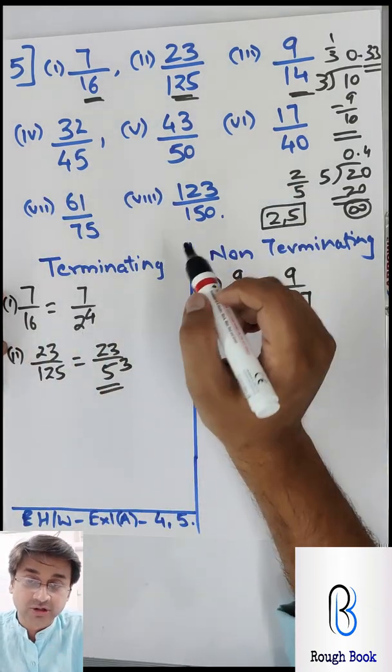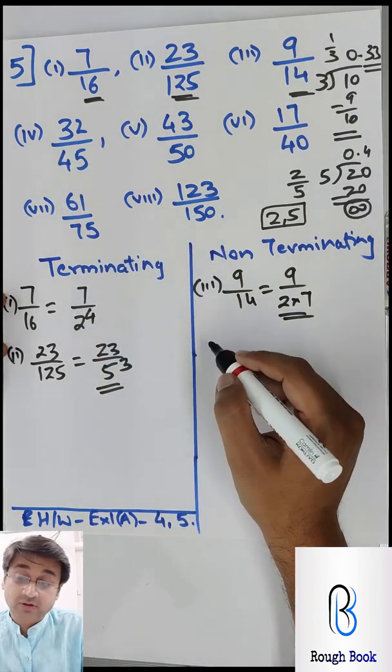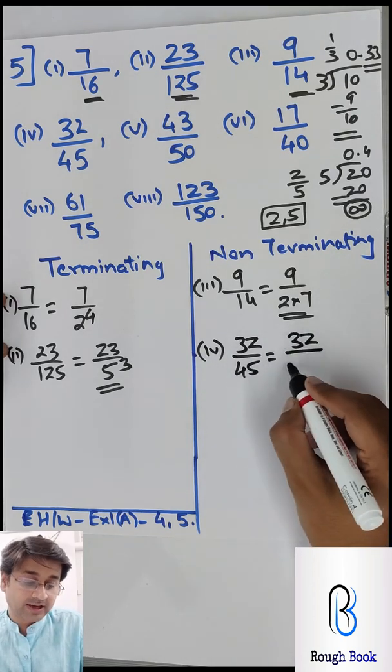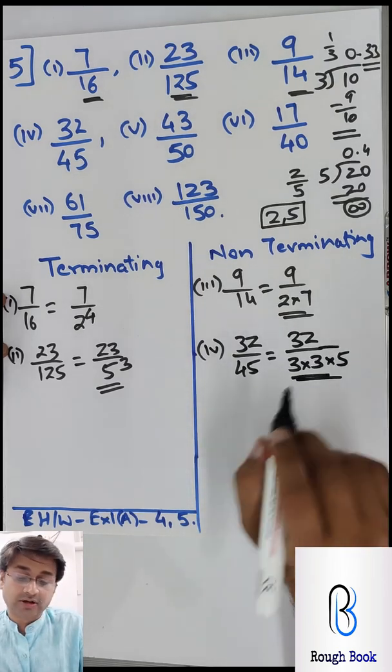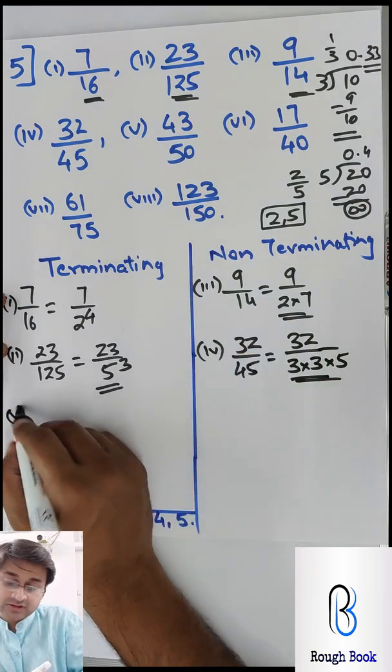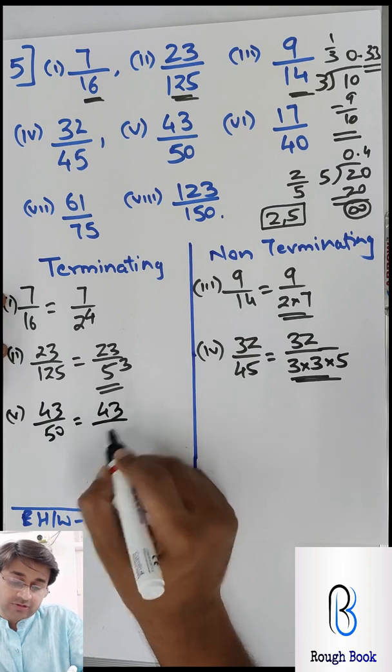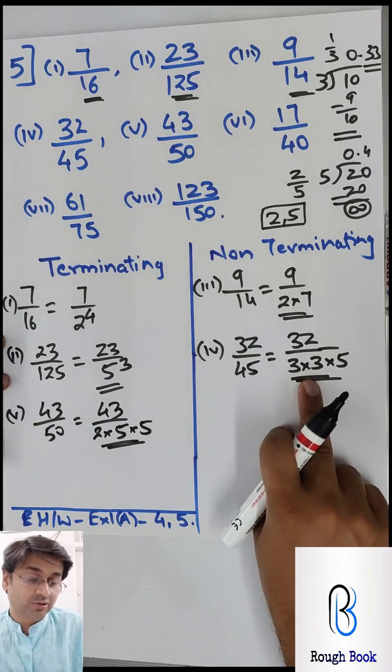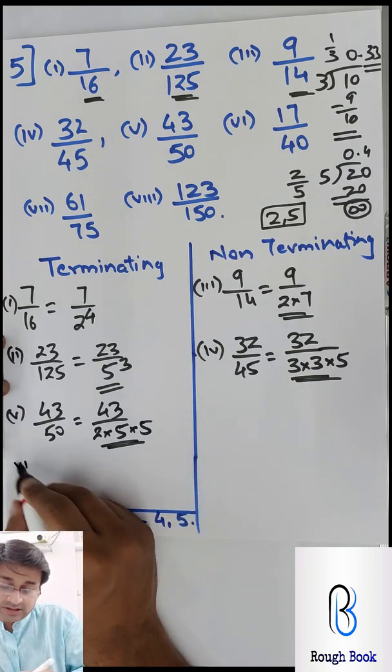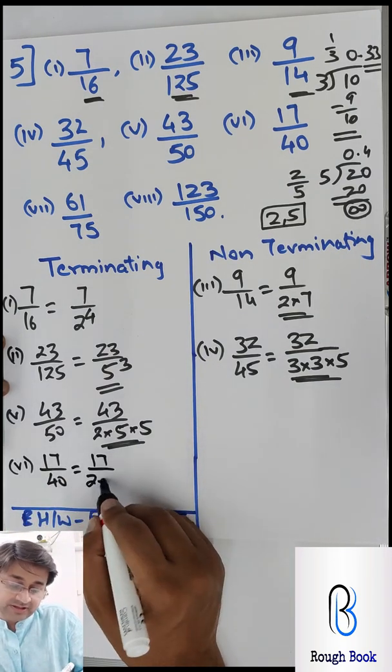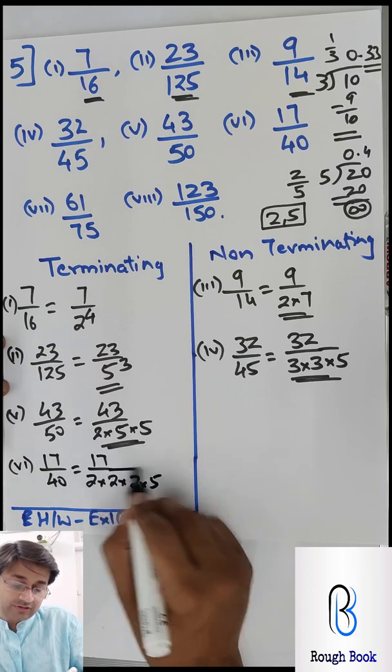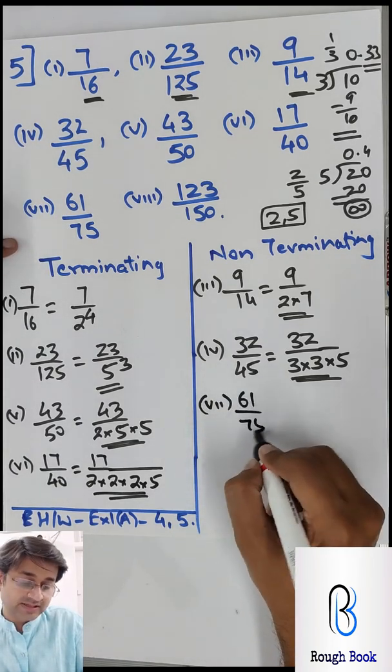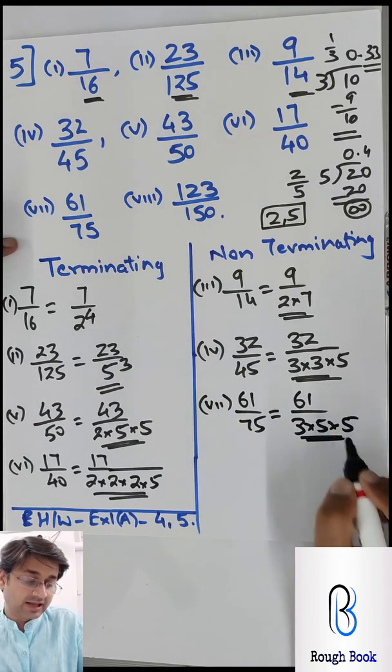Great. Come on, fill in the rest. Pause the video, come back once you finish. 32 by 45 - 45 is 3 times 15. So 32 by 45 will be non-terminating because it says 32 by 3 into 3, 9 into 5, therefore non-terminating. Then 43 by 50. So we know 43 by 50 is going to be 2 into 5 into 5, so that is only 2 and 5. So all 2's and 5's, terminating.